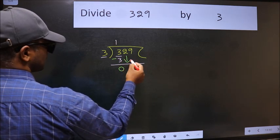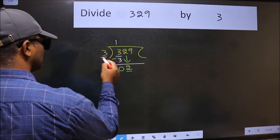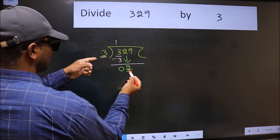After this, bring down the beside number. So 2 down. Now here we have 2 and here 3. 2 is smaller than 3.